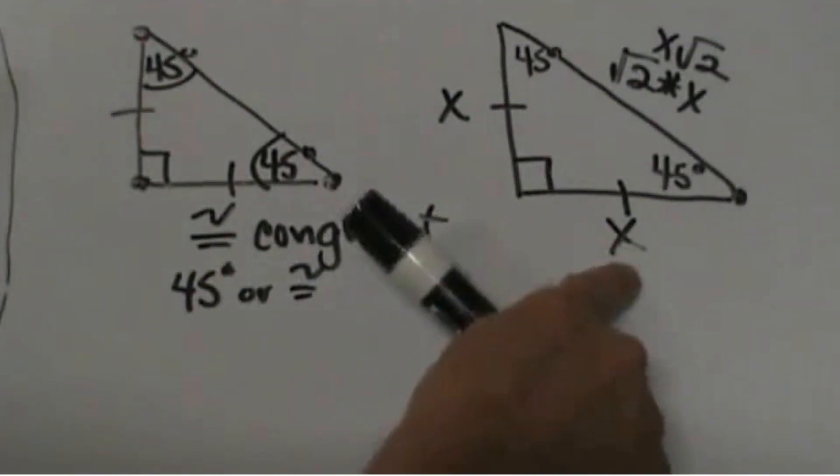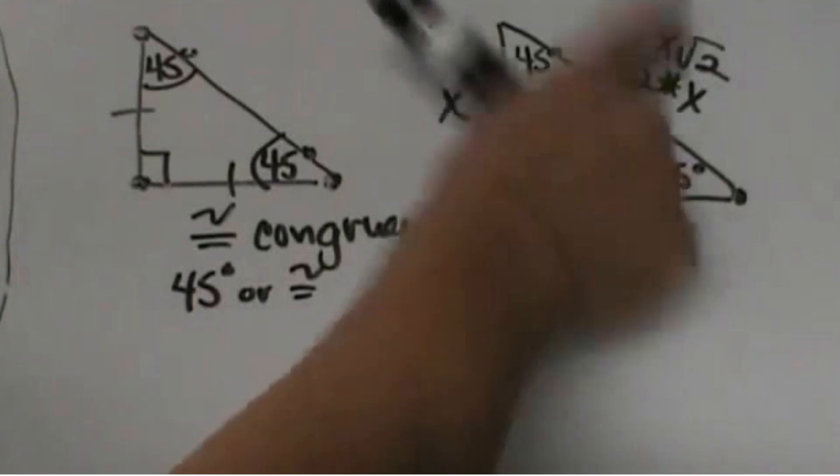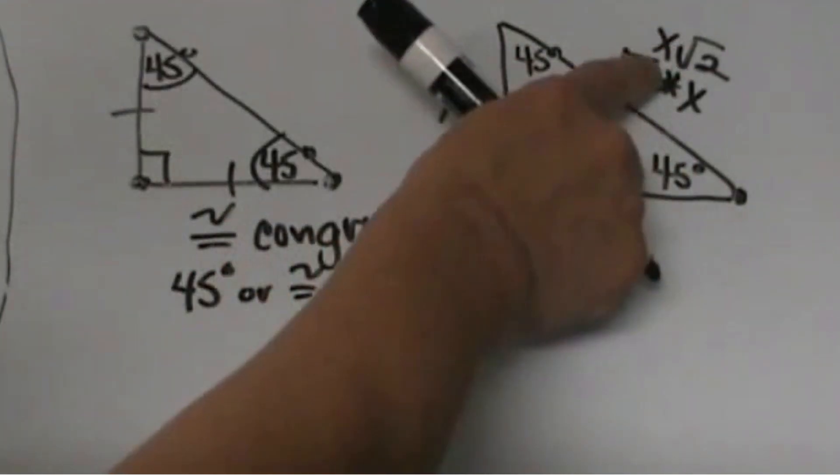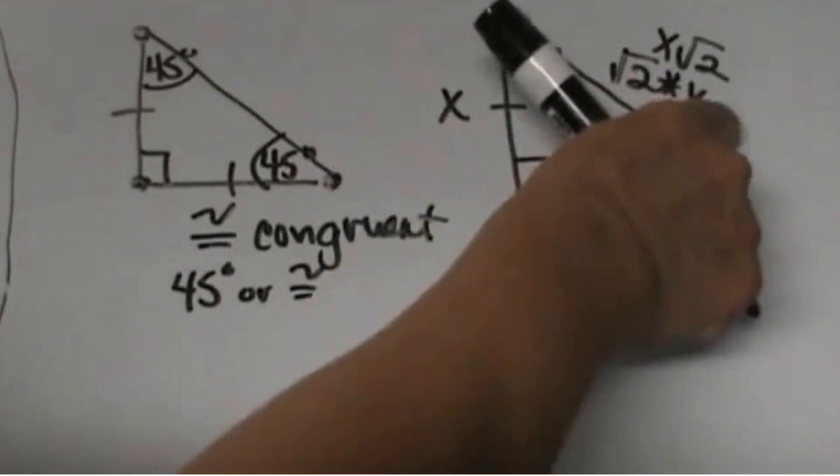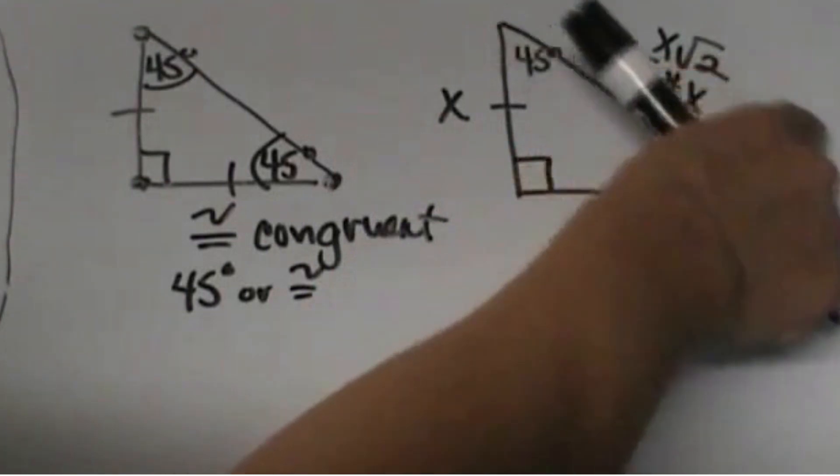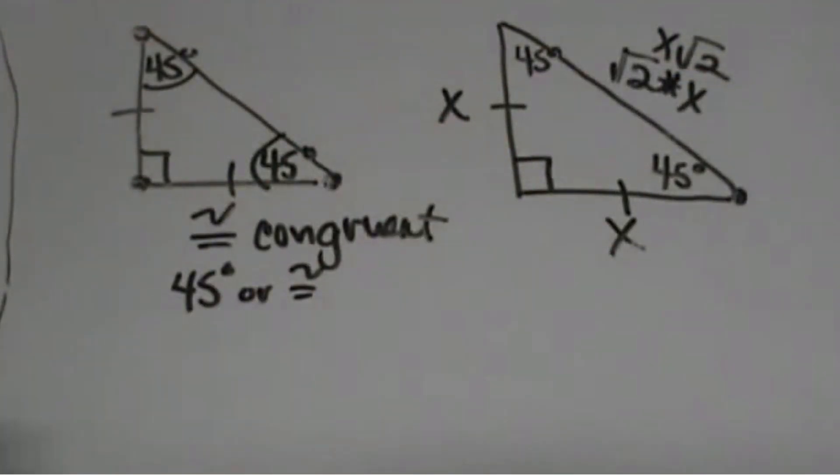So if you know one leg, you label the other leg and then you can label the hypotenuse by just multiplying it by the square root of 2. Think about this. If you are given the hypotenuse, since you multiplied by the square root of 2 to go from the leg to the hypotenuse, if you have the hypotenuse you are going to work backwards and divide by the square root of 2 to work it backwards.